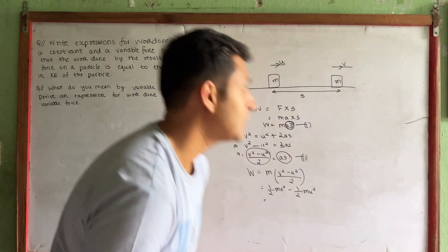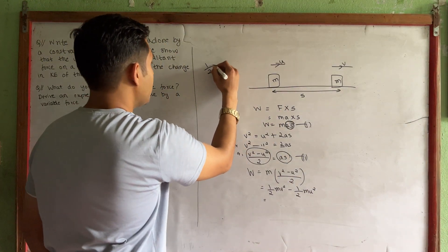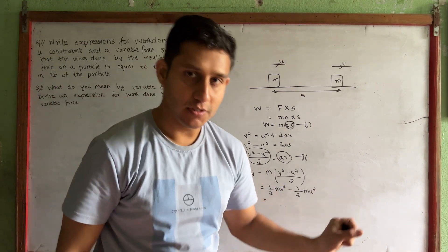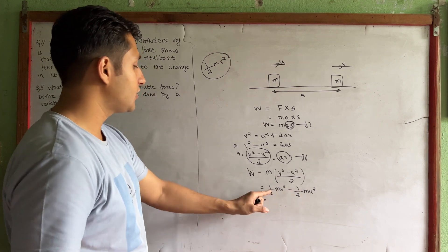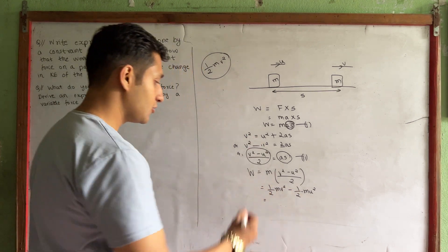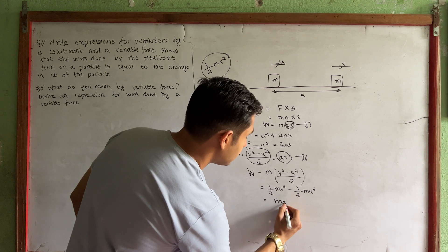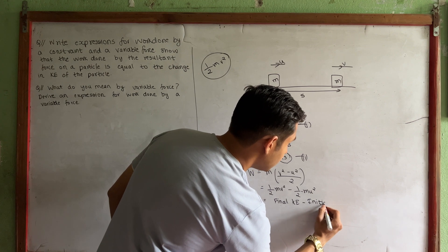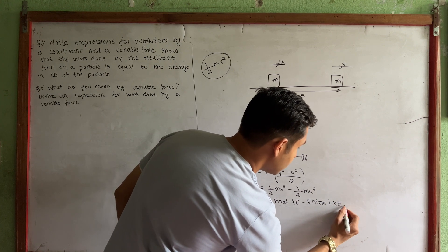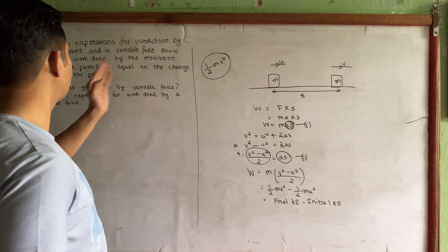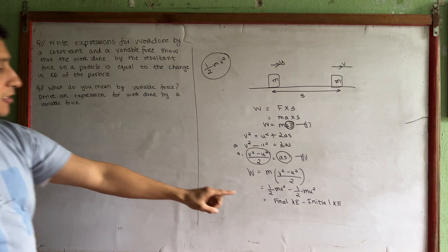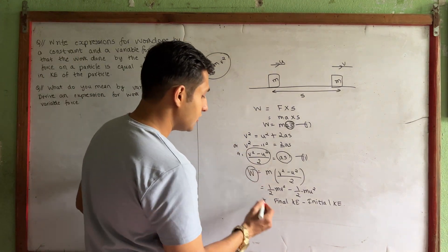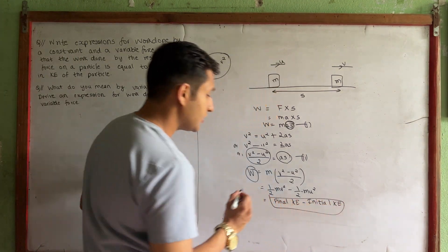Now, the kinetic energy formula is one-half mv squared. So one-half mv squared is the final kinetic energy and one-half mu squared is the initial kinetic energy. Therefore, work done equals final kinetic energy minus initial kinetic energy — which is the change in kinetic energy.